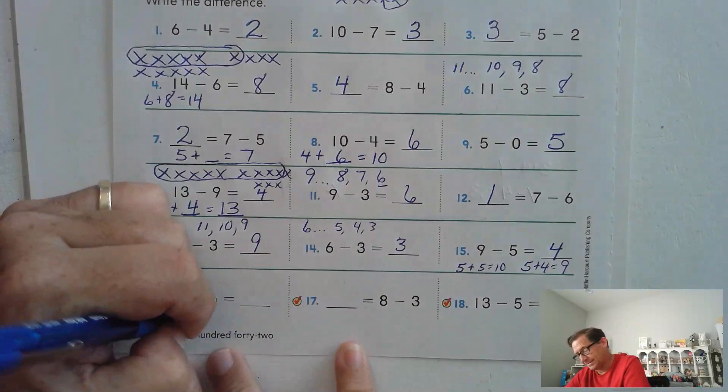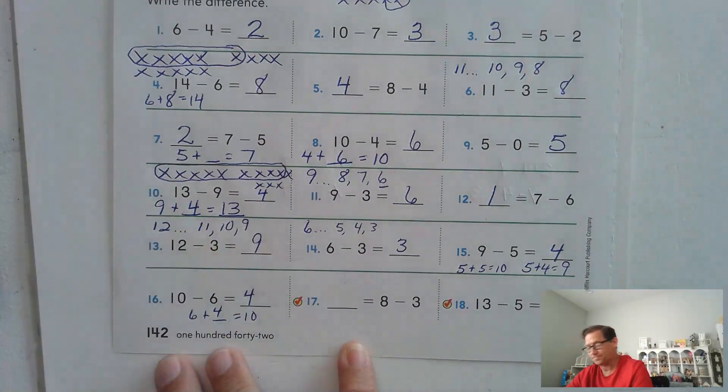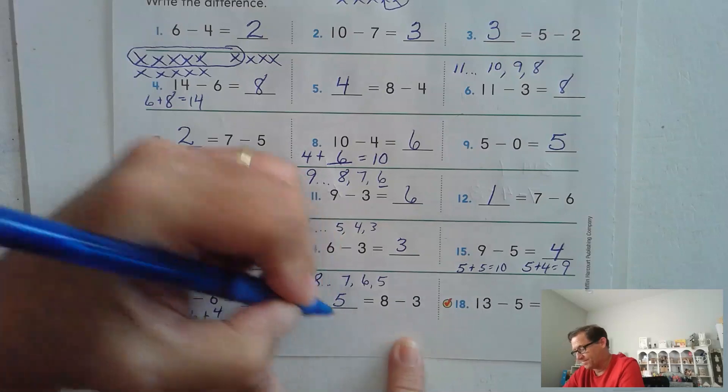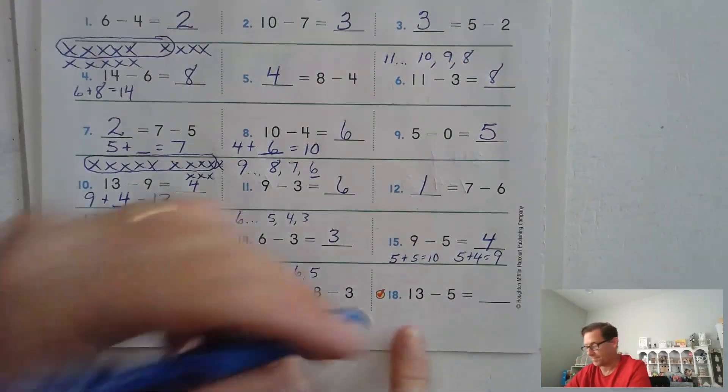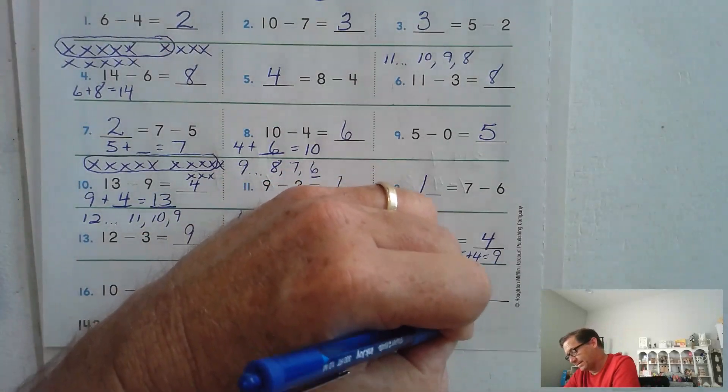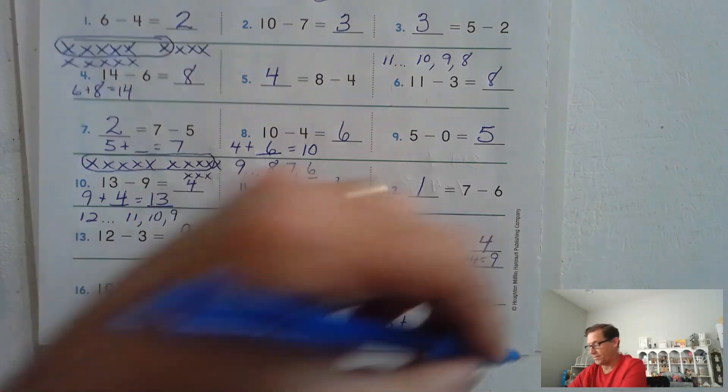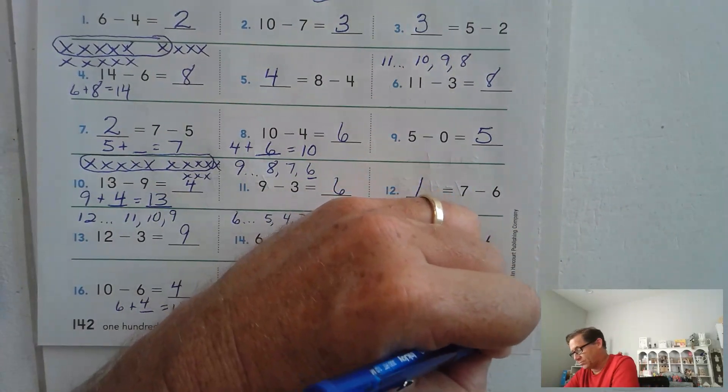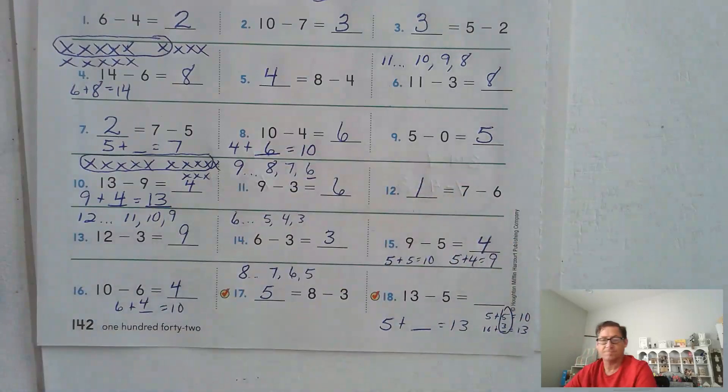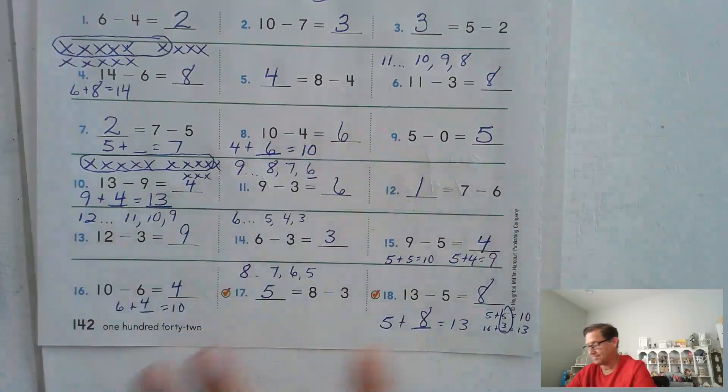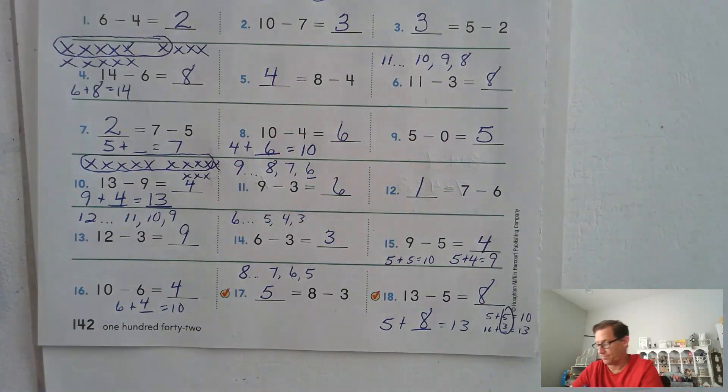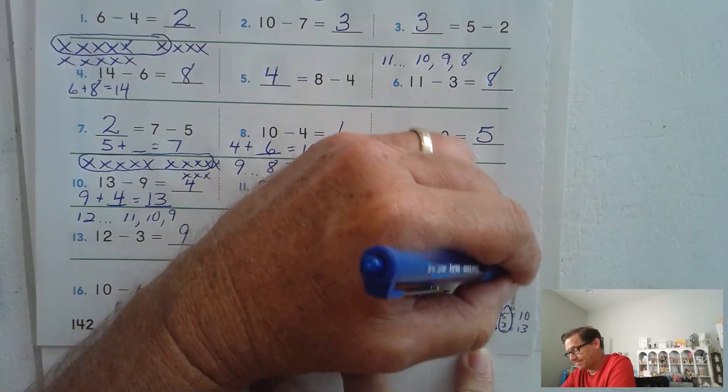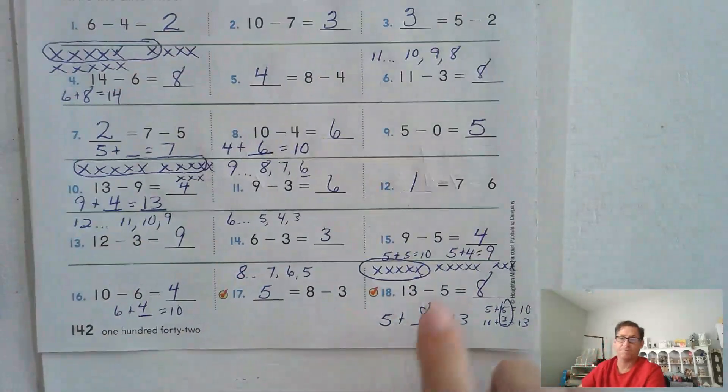10 minus 6. 6 plus what makes a 10? 4. 8 minus 3: 8, 7, 6, 5. 13 minus 5. 5 plus what is 13? Well, I know 5 plus 5 is 10. 10 plus what is 13? 3. So 8. You can also draw a picture. 5, 10, 13, and we have to take away 5. So 5, 6, 7, 8.